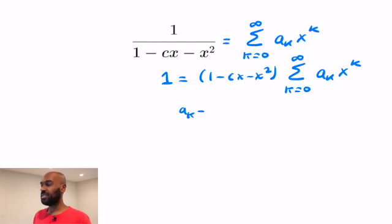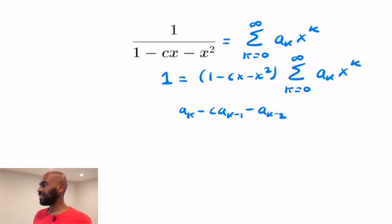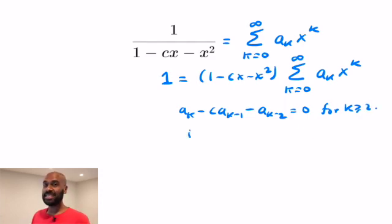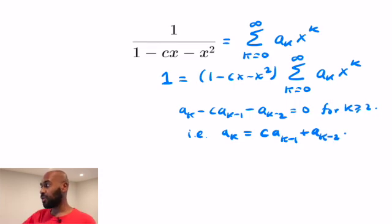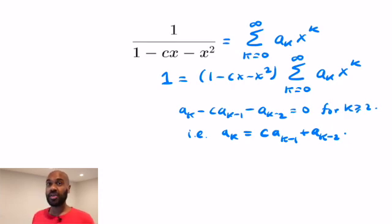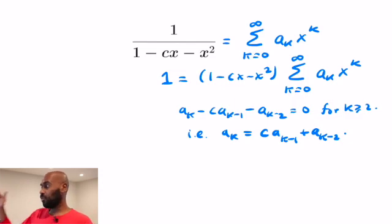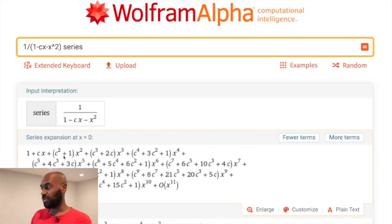Multiplying, we get that 1 minus c times x minus c squared times the series is identically 1. So if we extract the x to the k-th coefficient, we're going to get the expression on the left, which is going to have to be 0 for large values of k. And so we get that a sub k is c times a sub k minus 1 plus a sub k minus 2. That gives us a way to generate these polynomials in the variable c — this is a very useful technique for series and actually figuring out what the coefficients are.